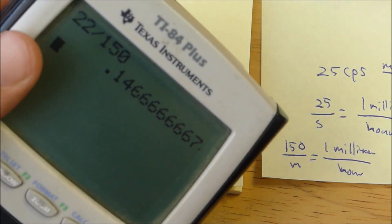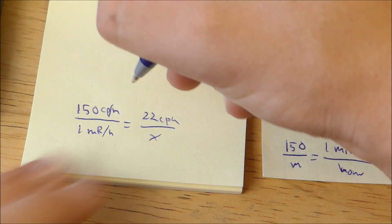That means the approximate background radiation of my room is equal to 0.14 millirems.